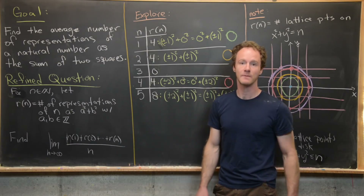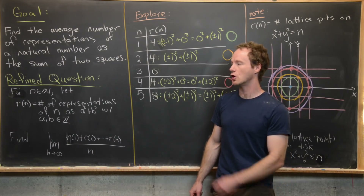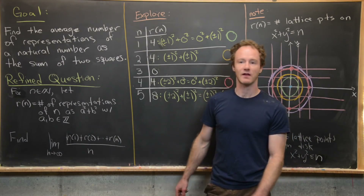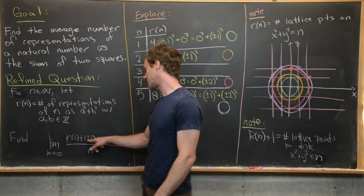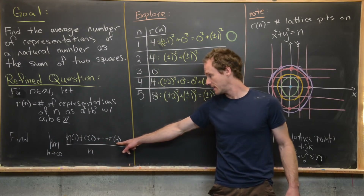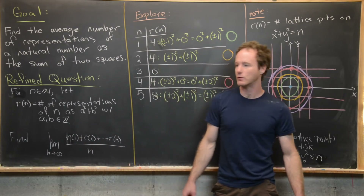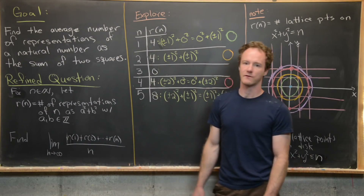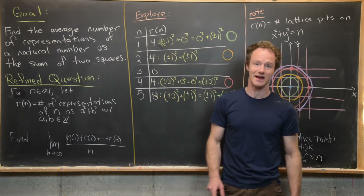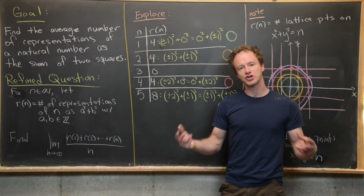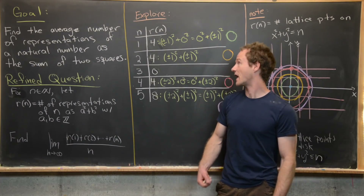Our goal is to find that average, but what do we mean when we're talking about an average over all of the natural numbers? We want to find the limit as n goes to infinity of [r(1) + r(2) + ... + r(n)] / n. This quotient inside the limit is the average number of representations of all natural numbers between 1 and n as a sum of two squares, so we take the limit of that object.